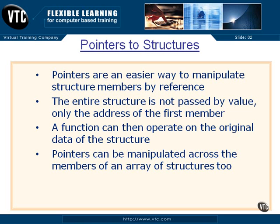Pointers can be manipulated across the members of an array, just like we saw with pointers to arrays previously. When you increment a pointer pointing to an array of structures, it will go to the next structure in the array. Rather than skipping forward a few bytes for an integer, if a structure is 50 or 60 bytes, the compiler knows what the pointer points to and increments it the appropriate number of bytes through memory.